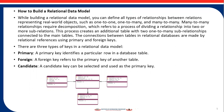How to build a relational data model? There are three types of keys in a relational data model. The first is primary key, then the second is foreign key, and the next is candidate key. Primary key identifies a particular row in a database table. The foreign key refers to the primary key of another table. Candidate key can be selected and used as a primary key. You can define all types of relationships such as one-to-one, one-to-many, and many-to-many. Many-to-many relationships require a decomposition, which refers to a process of dividing a relationship into two or more sub-relations.